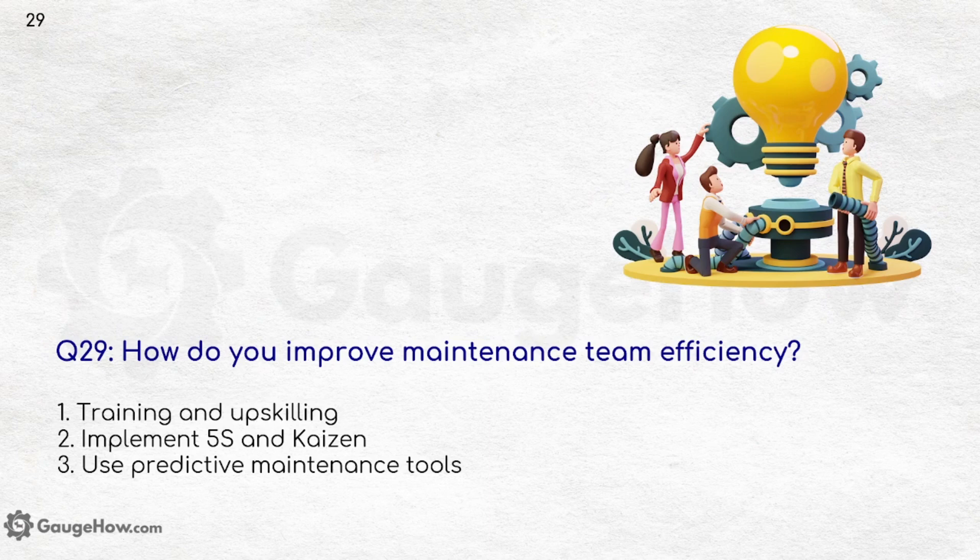How do you improve maintenance team efficiency? Training and upskilling, implementation of 5S and Kaizen, use of predictive maintenance tools, and so on. If you don't know about 5S and Kaizen, those topics are covered in previous videos — make sure you watch the full interview series.